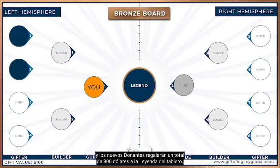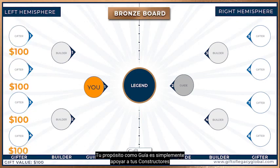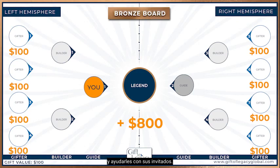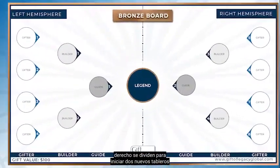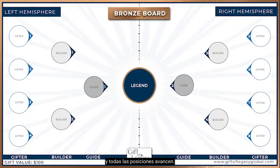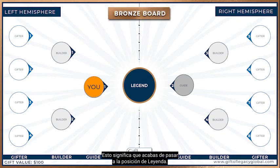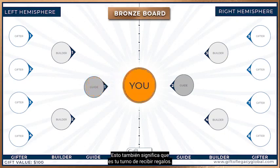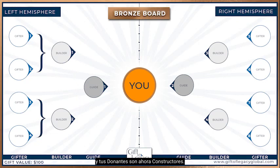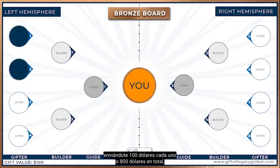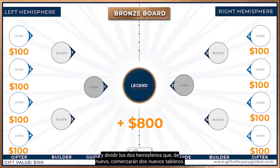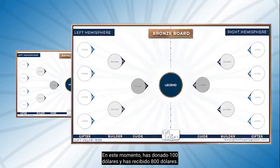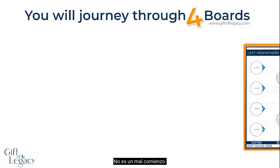See how all positions keep moving towards the legend position. The builders will now invite two new gifters each, and the new gifters will gift a total of $800 to the legend of the board. Your purpose as a guide is simply to support your builders and assist them with their invitees. Again, the left and right hemispheres split to start two new boards after the eight gifters have sent their unconditional gifts and all positions advance. This means you have now moved to the legend position — it will be your turn to receive gifts.